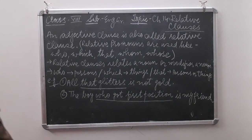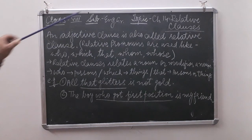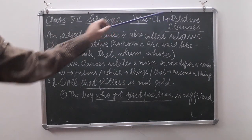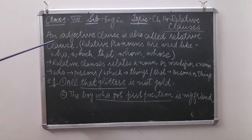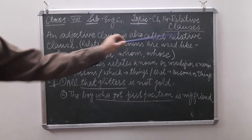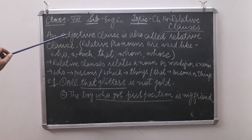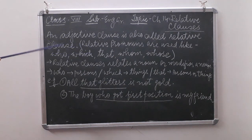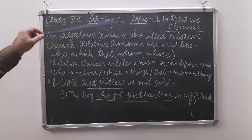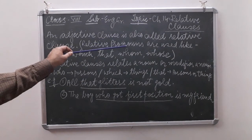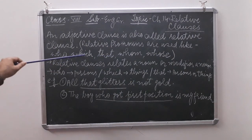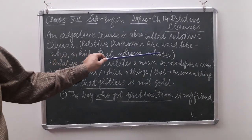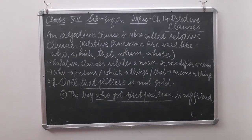Children, we have already read the adjective clause, adverb clause, and noun clause. Here, the adjective clause plays a key role. An adjective clause is also called a relative clause. Just as an adjective clause describes a noun, a relative clause relates a noun. In relative clauses, we use relative pronouns: who, which, that, whom, and whose.